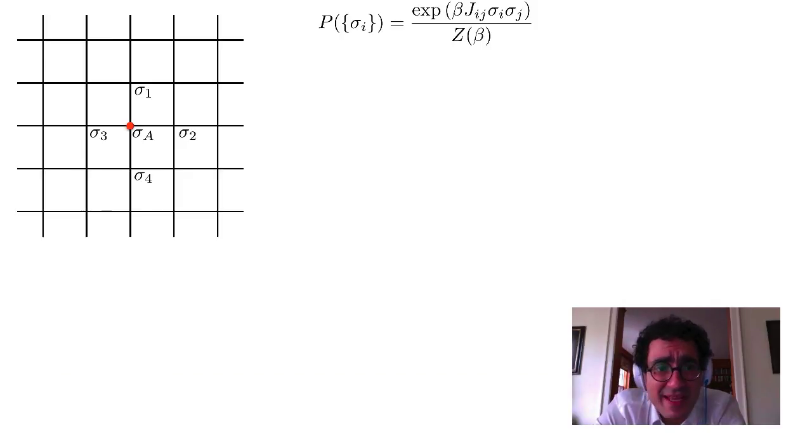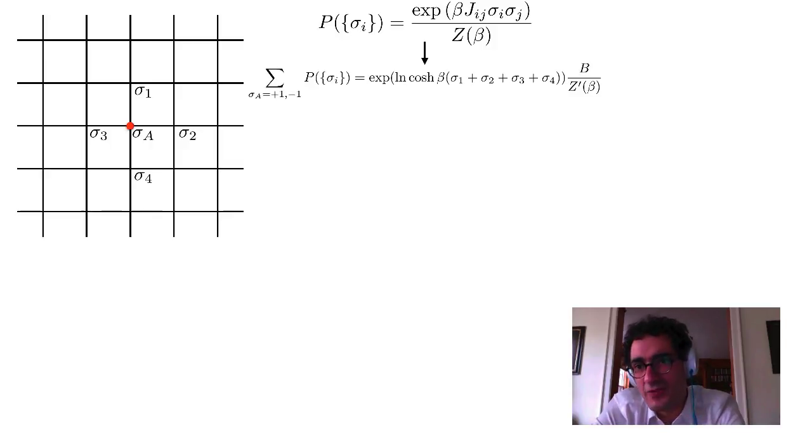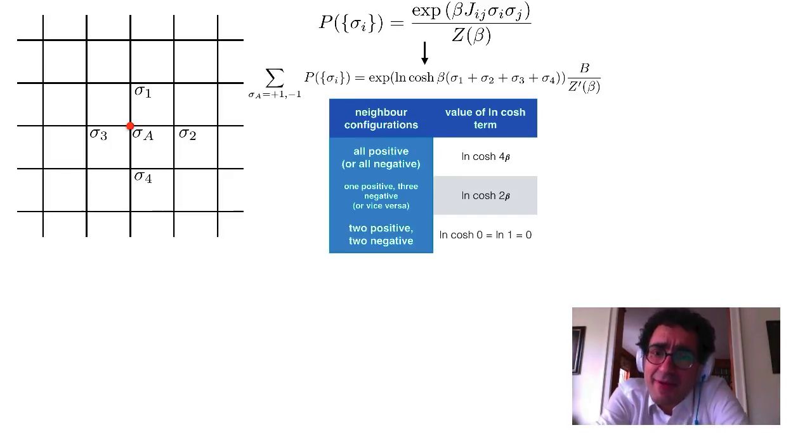All right. So what happens next? Again, we began with that joint probability distribution. When we traced over sigma a, we got this new one. Again, we phrased it in terms of exponentials, but things are looking a bit strange. And now what I want you to do is look at that particular term, that log cosh beta term. If the sigmas could be continuous, then everything would be really strange. But in fact, because the sigmas could only take on plus 1 or minus 1 values, there's only a few possible values that that term in the exponential can take.